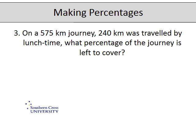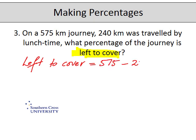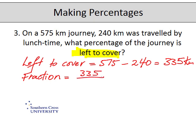The third question: on a 575 kilometre journey, 240 kilometres was travelled by lunchtime. What percentage of the journey is left to cover? We need to look at what's left to cover. The journey was 575 and we've done 240, so the amount left must be 575 subtract 240, which means we have 335 kilometres left to travel.